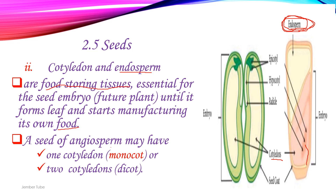A seed of an angiosperm may have one cotyledon, known as monocot, or it may have two cotyledons, known as dicot.